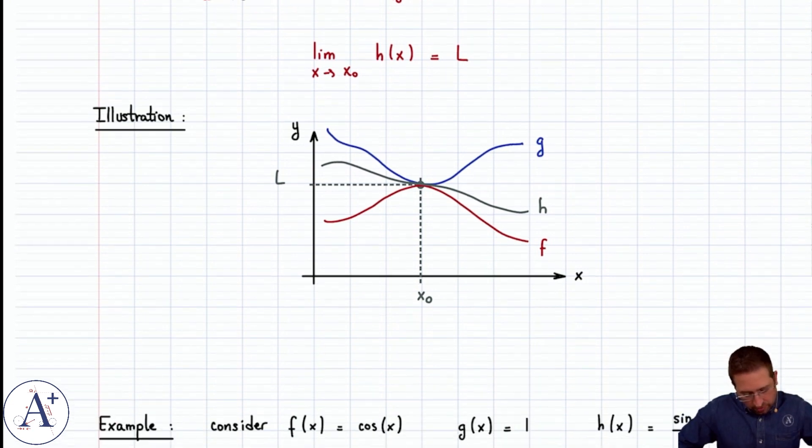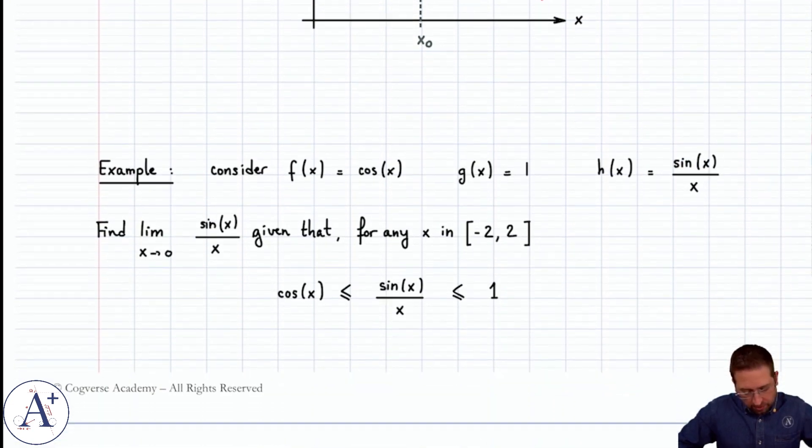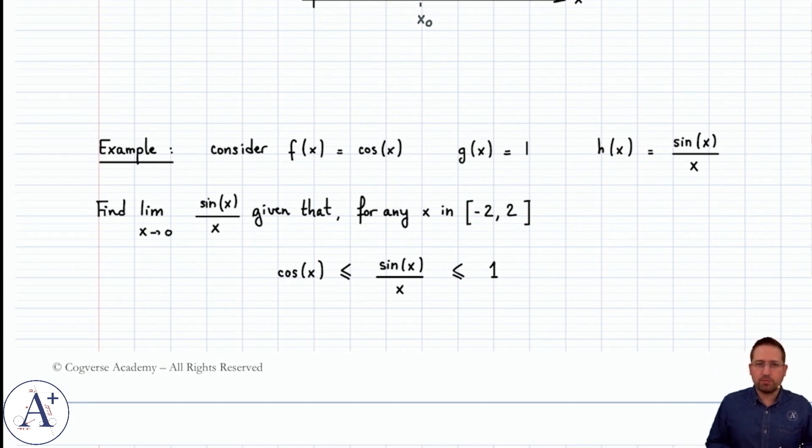Let's do a very simple example here, where there's a bit of hand-holding because we don't yet know how to derive this double inequality. At some point we will be able to do that, and it's actually a classic question. But for now, let's consider f(x) = cos(x), g(x) = 1, and h(x) = sin(x)/x.